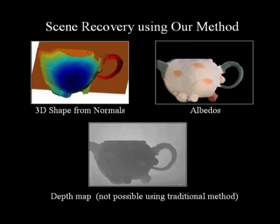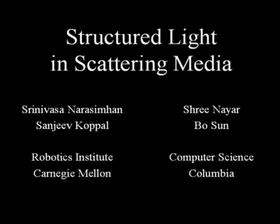Now we show the results of applying our algorithm to these images. The computed 3D shape is visually accurate and the scattering effects have been removed from the albedo map. In addition to surface normals and albedos, our method also yields the depth map of the scene, which is not possible using traditional photometric stereo. In summary, we have taken a significant step toward extending structured lighting to scattering media. We believe that our results can benefit a wide range of underwater, outdoor, aerial, and microscopic imaging applications.